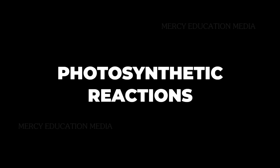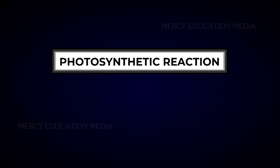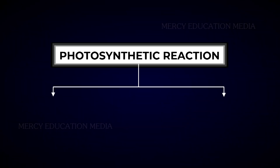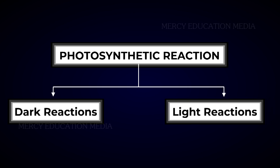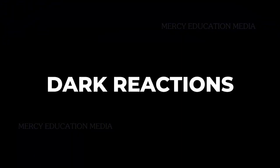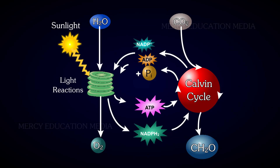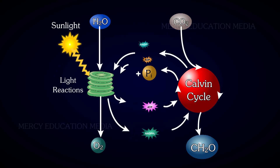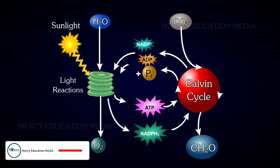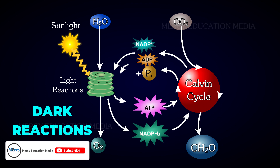Let us know about photosynthetic reactions. The photosynthetic reaction is divided into dark reactions and light reactions. Let us know in detail about dark reactions. The reactions that catalyze the reduction of carbon dioxide to carbohydrates with the help of ATP and NADPH2 generated by the light reactions are called dark reactions.